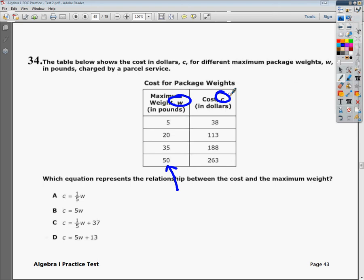So, the first one says if I multiply W by one-fifth, I should get the answer in the C column. But if I do one-fifth times five, which would be the number I'm plugging in here, I'm going to get one. It's supposed to be 38, so I know that A is not the right answer.